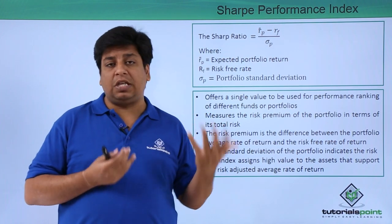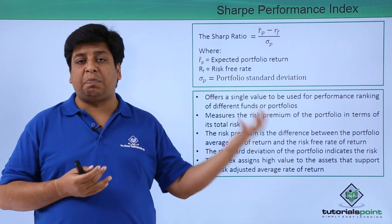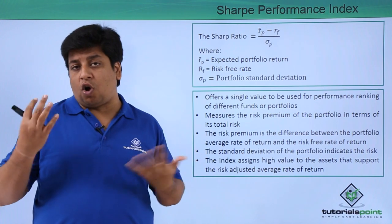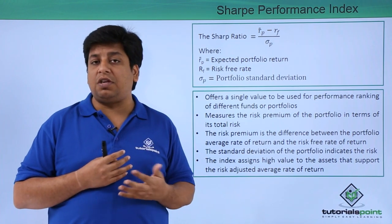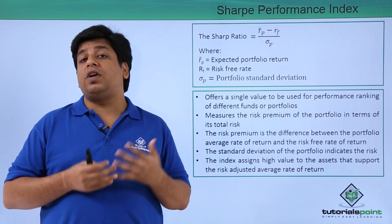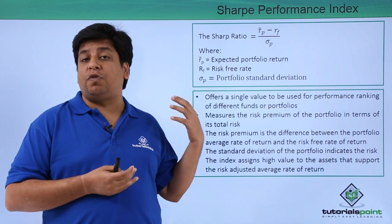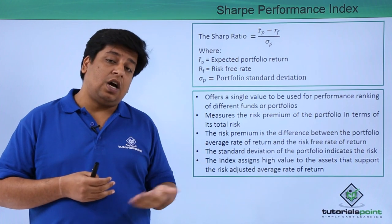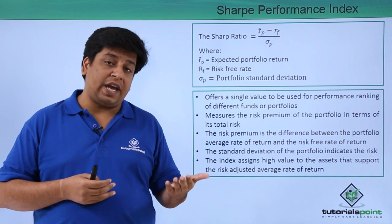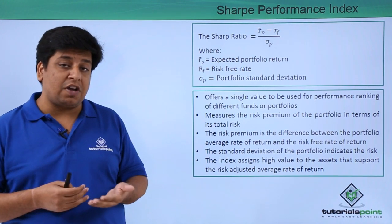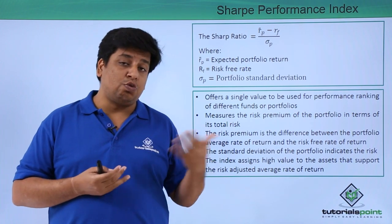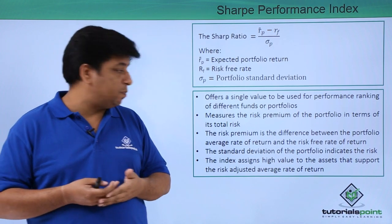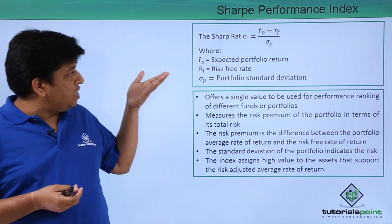Portfolio standard deviation reflects how volatile the portfolio valuation is over the period of time you are considering — say, n periods. The variance formula is: (x minus x-bar) squared, divided by n. Taking the square root of the variance gives you the standard deviation of your portfolio.